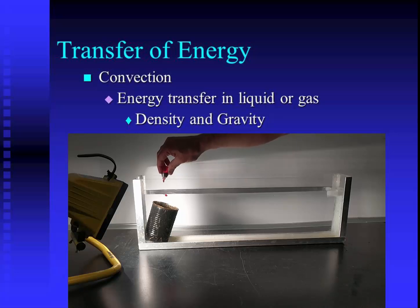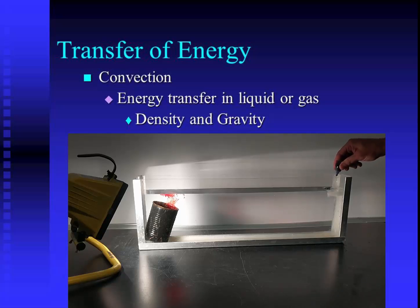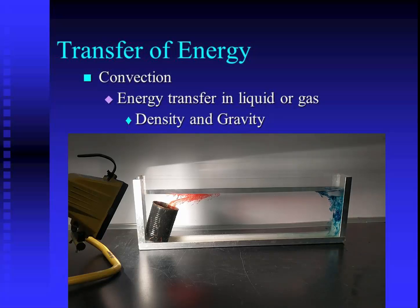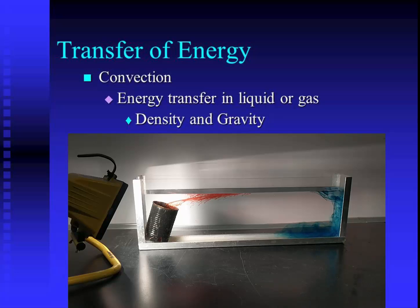It's easier to see convection in water, so let's take a look at this water tank. On the left side, there is a black can and an intense light shining on the can. On the right side are several ice cubes. I've added some food coloring to help the visualization. On the left side, the intense light is radiating energy onto the dark-colored can which absorbs it. As the atoms absorb the energy, they start to move faster. As they move faster, they expand or increase in volume. Increasing volume means lower density, which causes the red water to float.